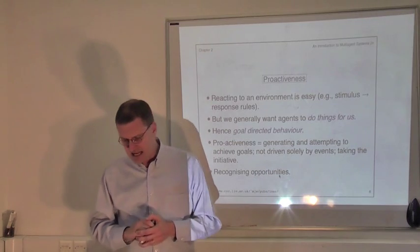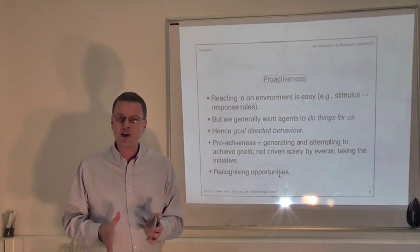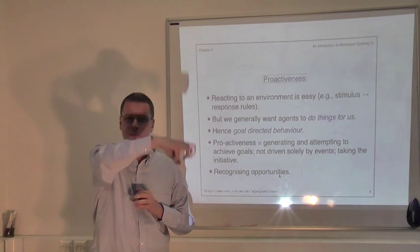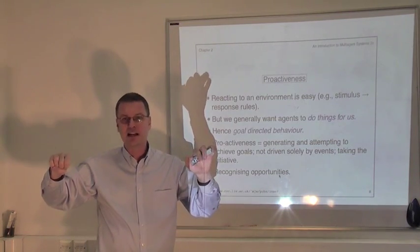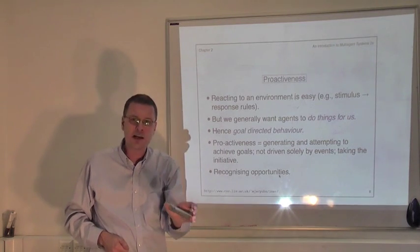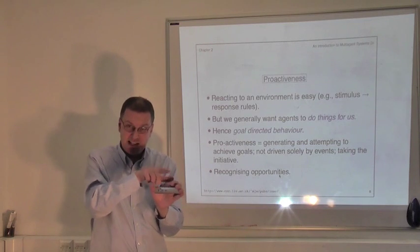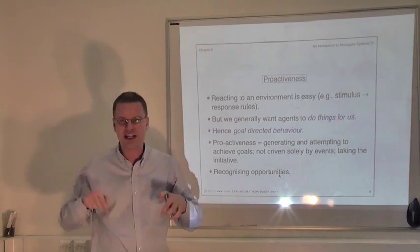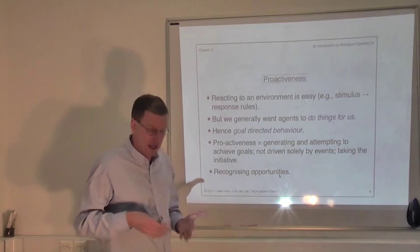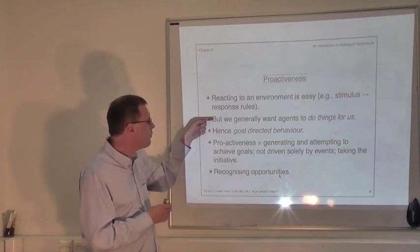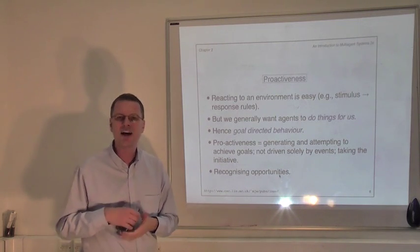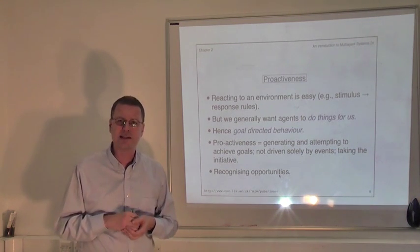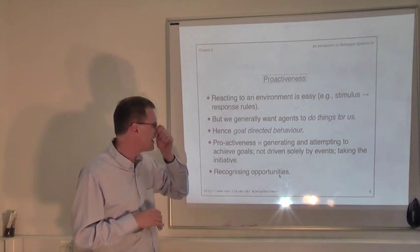Reactivity in some sense is very easy — you can build a very reactive system just with a lookup table with stimulus-response rules. It says: if I see this stimulus, if my environment looks like this, then do this corresponding action. All you have to do is go down the lookup table until you find a left-hand side that matches your current situation and then perform the corresponding action. It's computationally easy to do and it will give you reactive agents. But the point is we want agents to do things for us, to achieve our delegated goals, and stimulus-response behaviour is not the most effective way of building agents that can exhibit goal-directed behaviour.